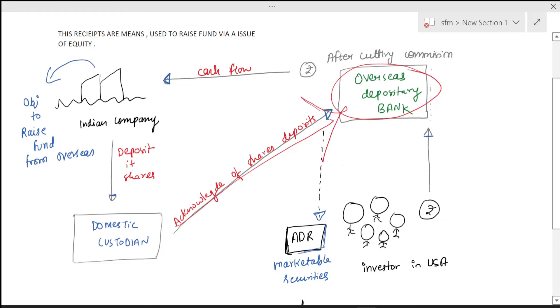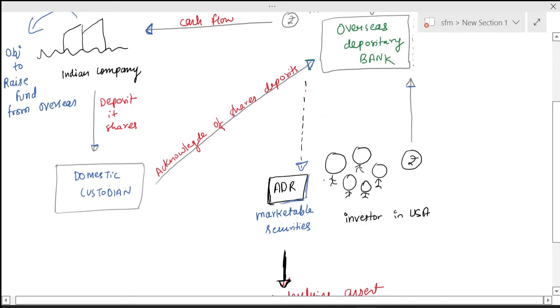The investor will deposit their money in the bank and get ADR in return. ADR is marketable securities, which means if Mr. A wants to sell to B, B can sell to C - anybody can buy or sell them.